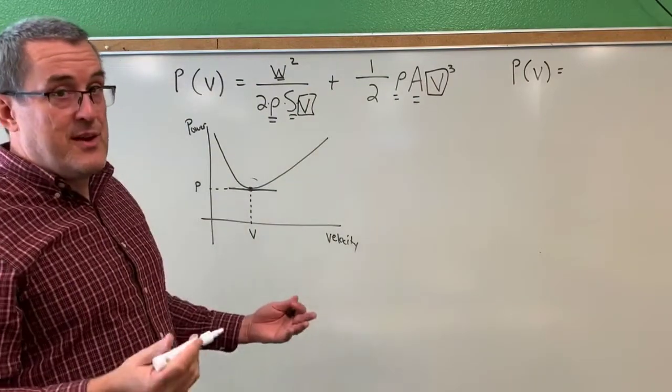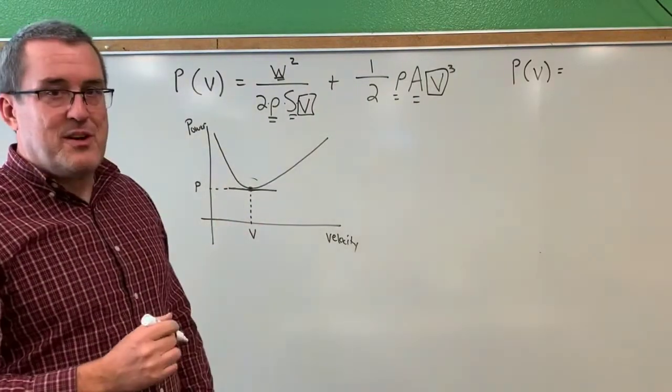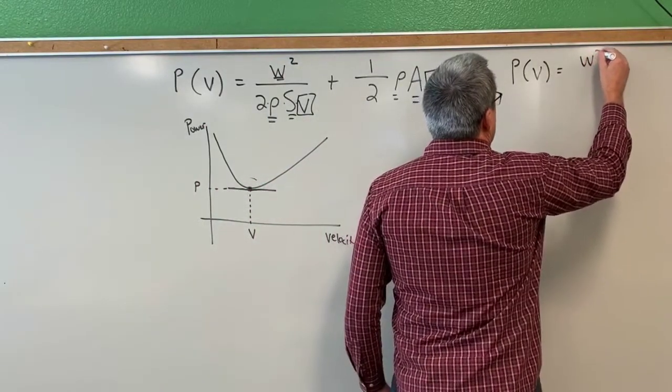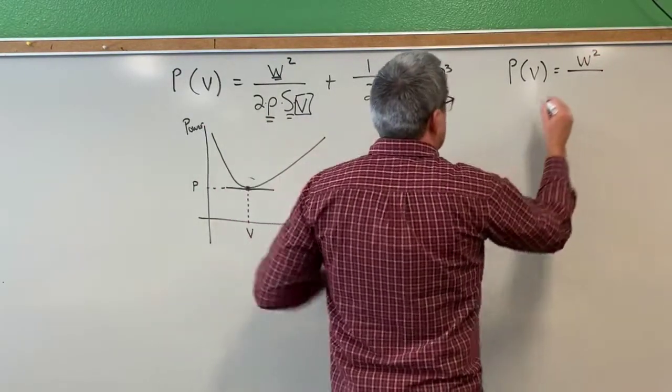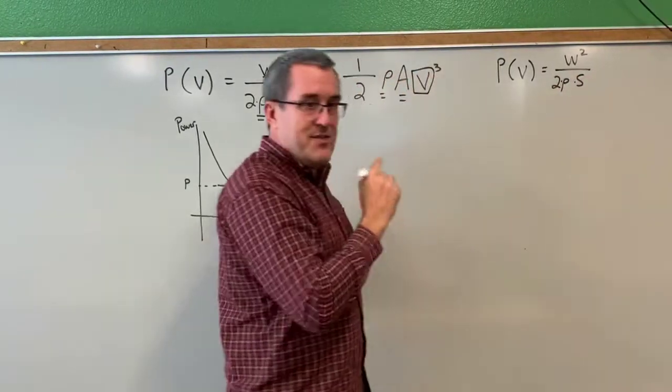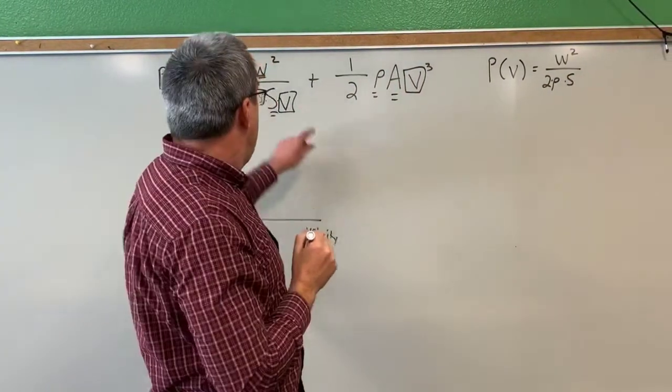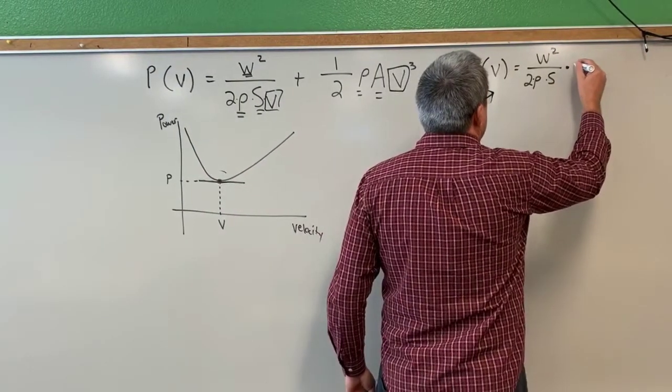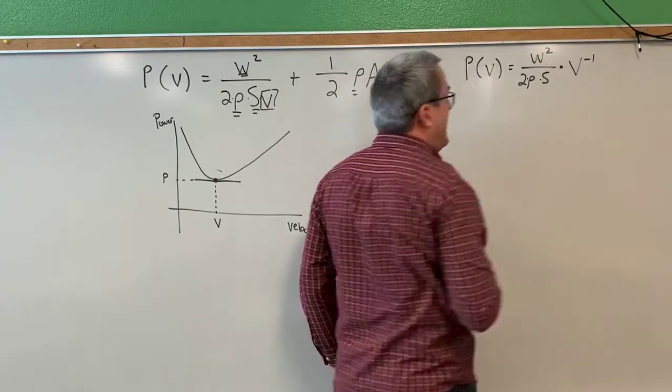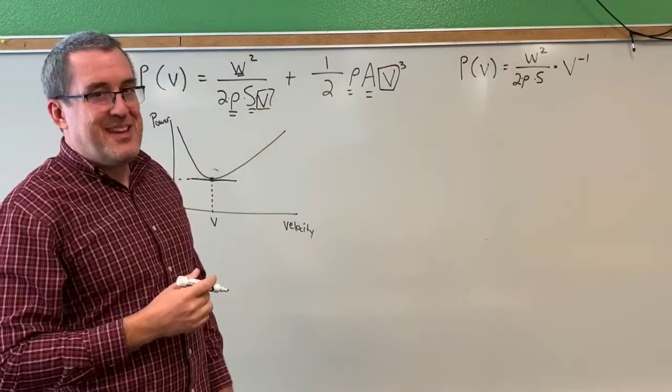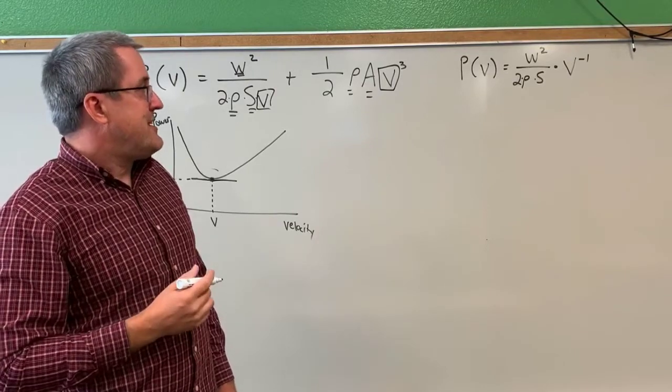So to take the derivative of this, I'm going to do a little bit of algebra first. And the algebra is this. First, we're going to say W squared over 2 rho S. Because remember, all of that is just constant. Now algebraically, that division of V can be expressed as V to the negative 1 power. And the reason I'm doing that is because taking the derivative will just be easier if I write it as V to the negative 1 power.